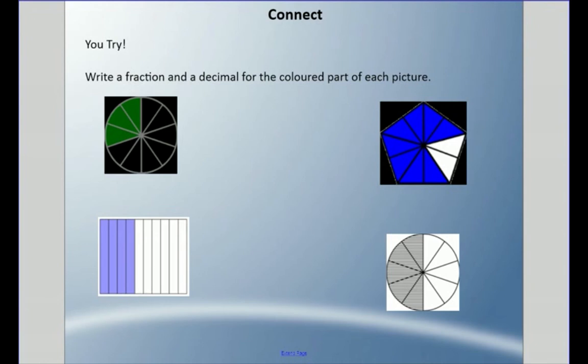I'm going to get you to try some. I'd like you to write each of these pictures as a fraction and as a decimal for the colored part for each picture. For my black circle there, there are three green shaded. You can't quite see that on your screen. So pause it, come back when you're ready.